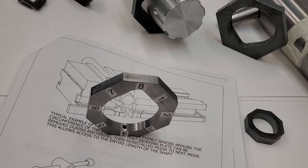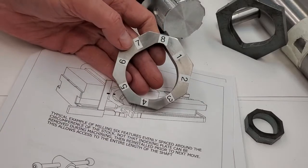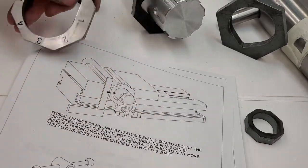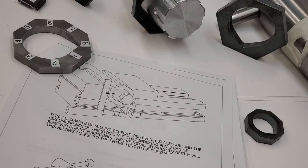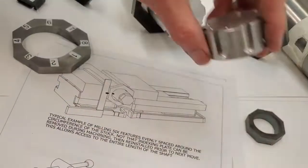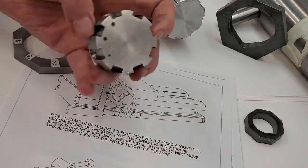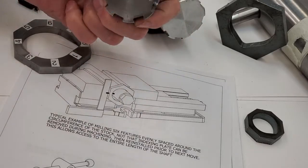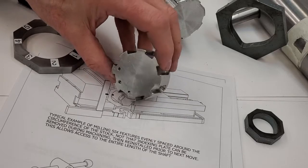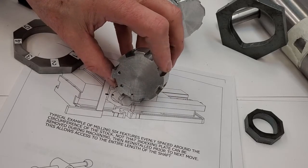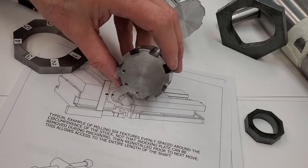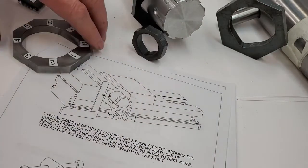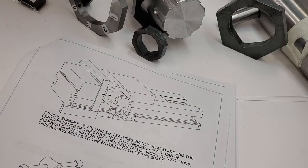Okay guys. Let's review what the indexing plates are all about. These plates allow you to place features around the circumference of a circular part evenly spaced around the circumference. You can do two, three, four, six, or eight features around the circumference. Depending if you use the octagonal or the hexagonal indexing plates.